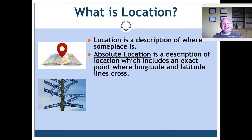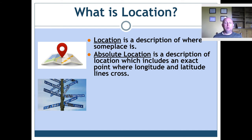There are two different kinds of location. One of them is called absolute location. When you hear the word absolute, think exact. Absolute location means your exact location, and we use longitude and latitude to describe it. So absolute location is a description of location which includes an exact point where longitude and latitude lines cross.